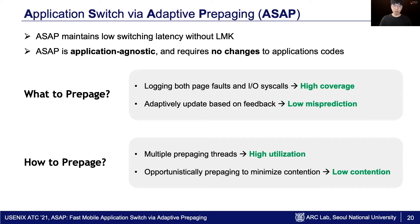For how to pre-page, ASAP uses multiple threads for pre-paging and lets those threads use the CPU opportunistically. Through this, it can achieve high resource utilization and low contention.